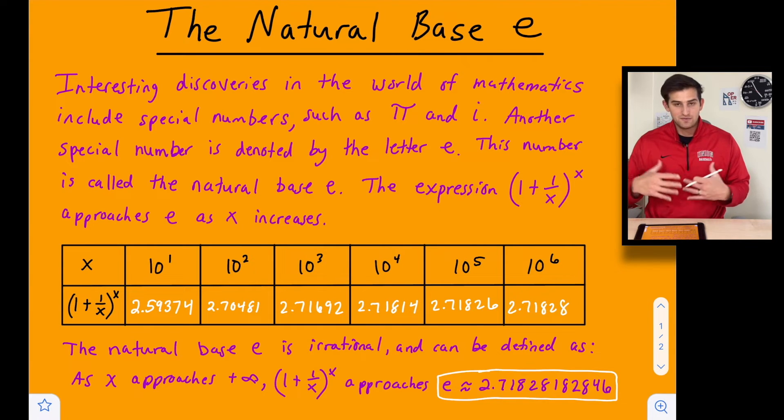And so basically, as we say pi is 3.14, we could say e is 2.718 or 2.72 if we're approximating to the nearest hundredth there.